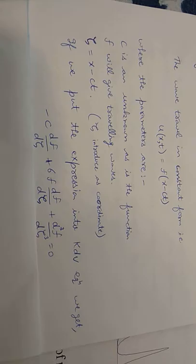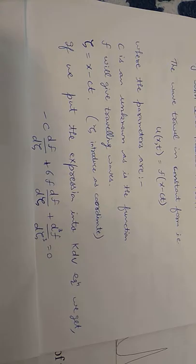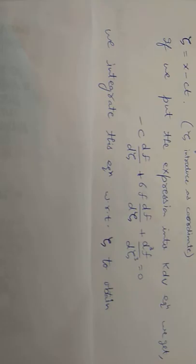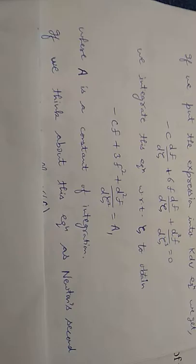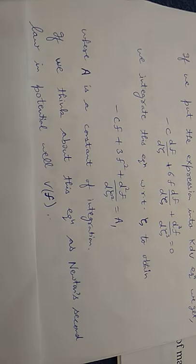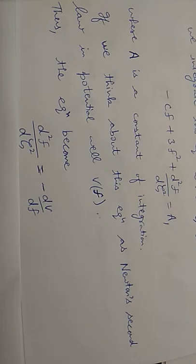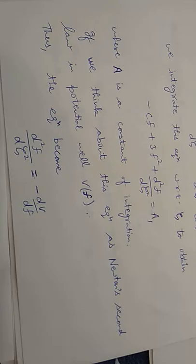Minus c df/dχ plus 6f df/dχ plus d³f/dχ³ equals zero. When we integrate this equation with respect to chi, we obtain minus cf plus 3f² plus d²f/dχ² equals a_1, where a_1 is a constant of integration. If we think about this equation as Newton's second law in the potential well V(f), the equation becomes d²f/dχ² equals minus dV/df.